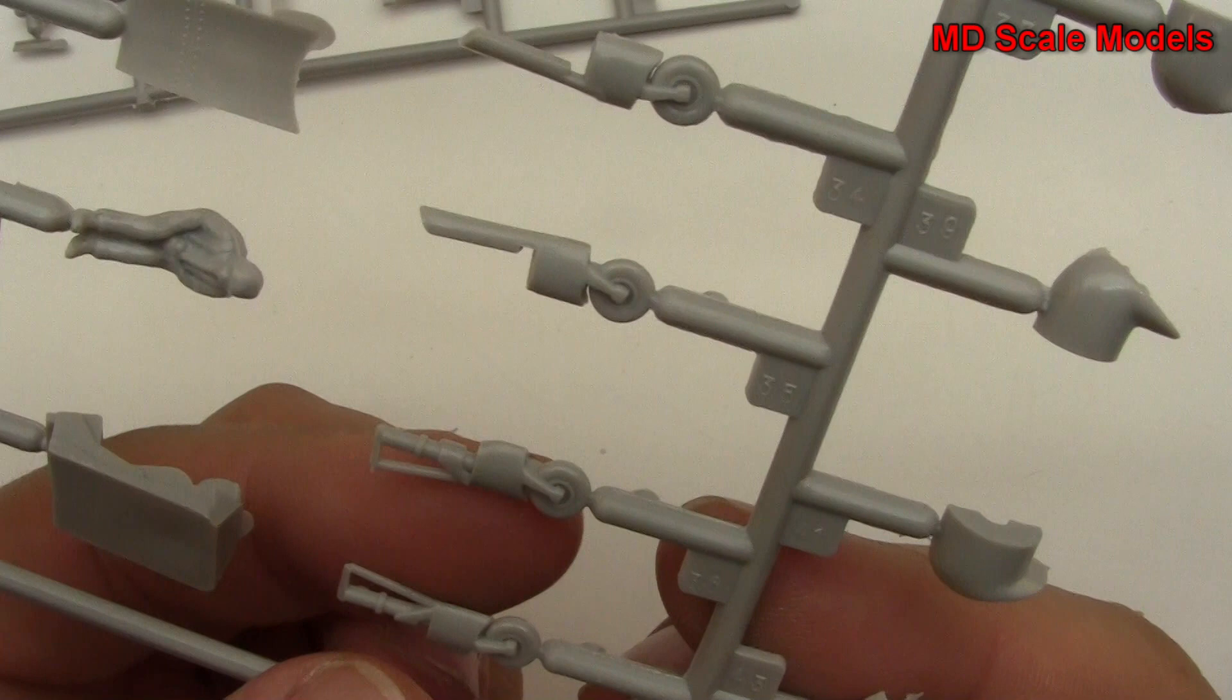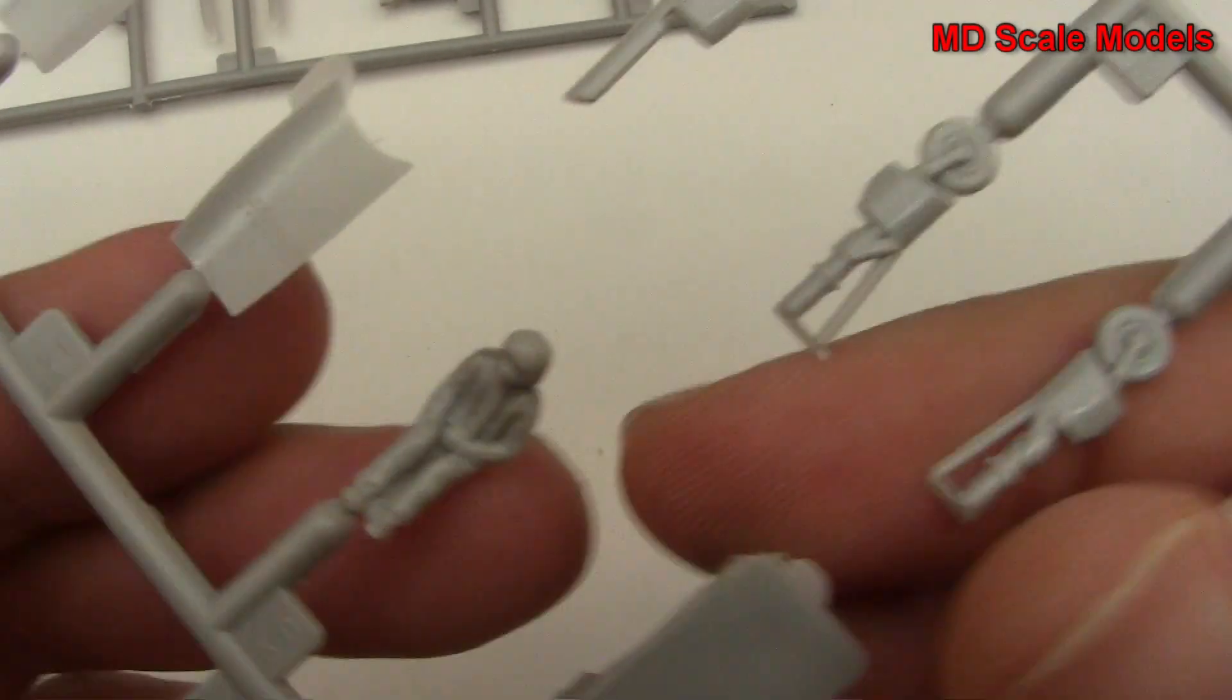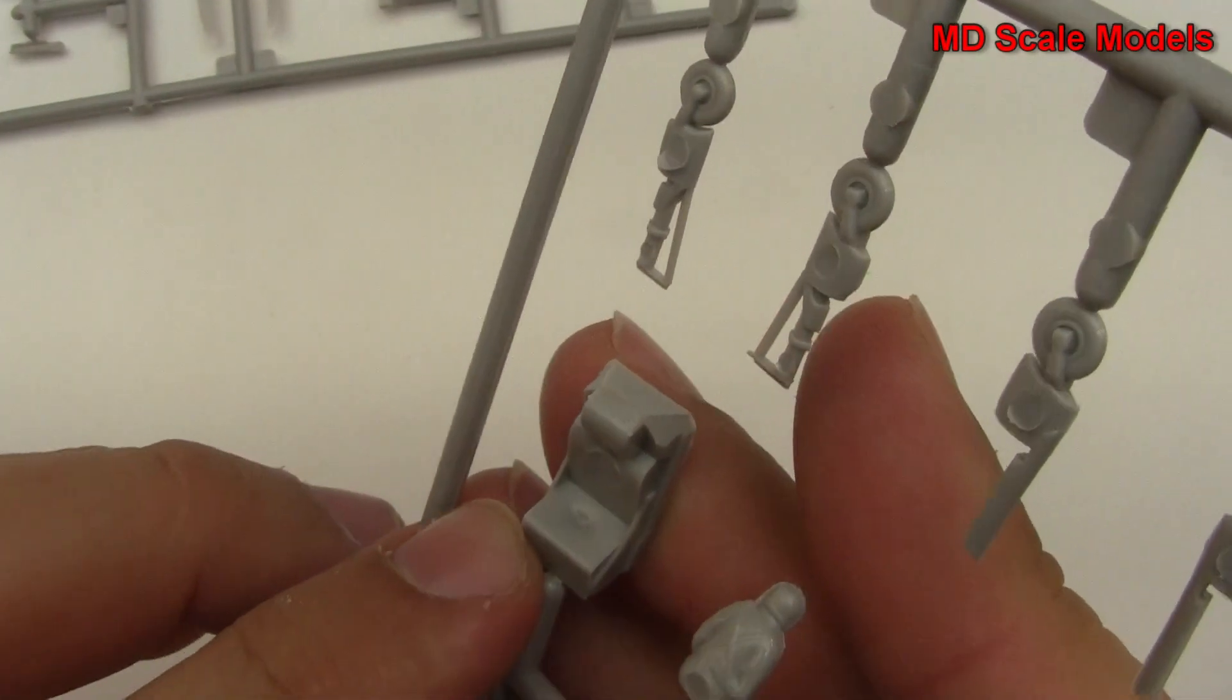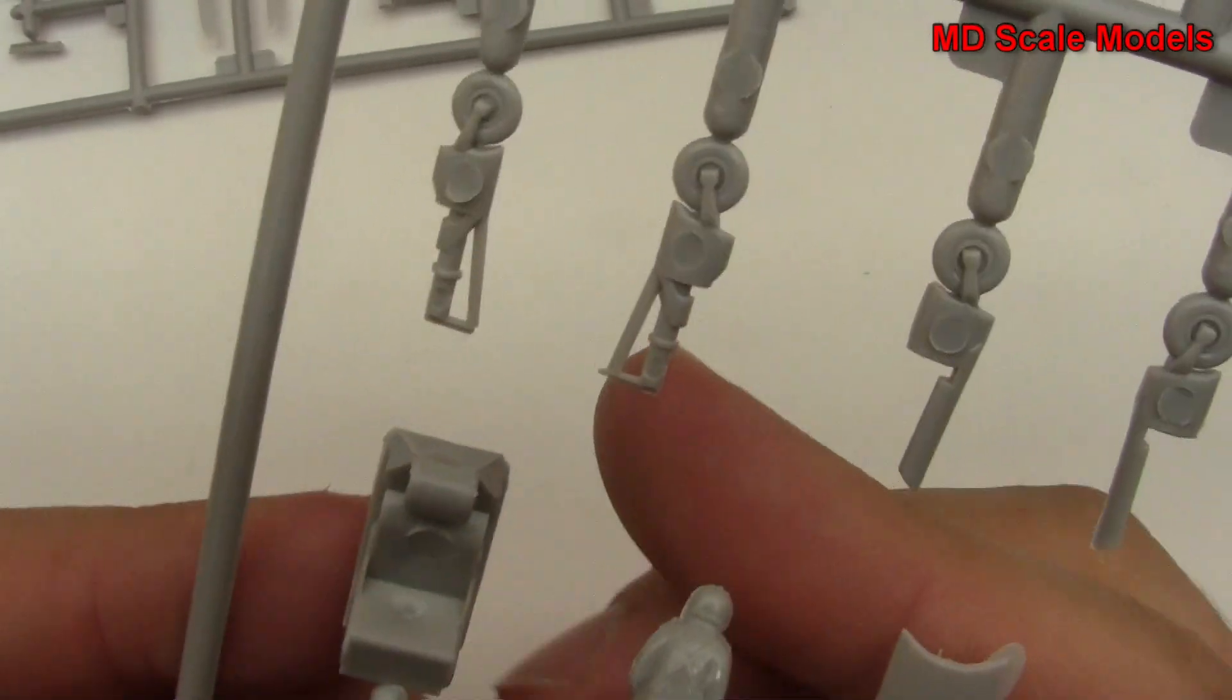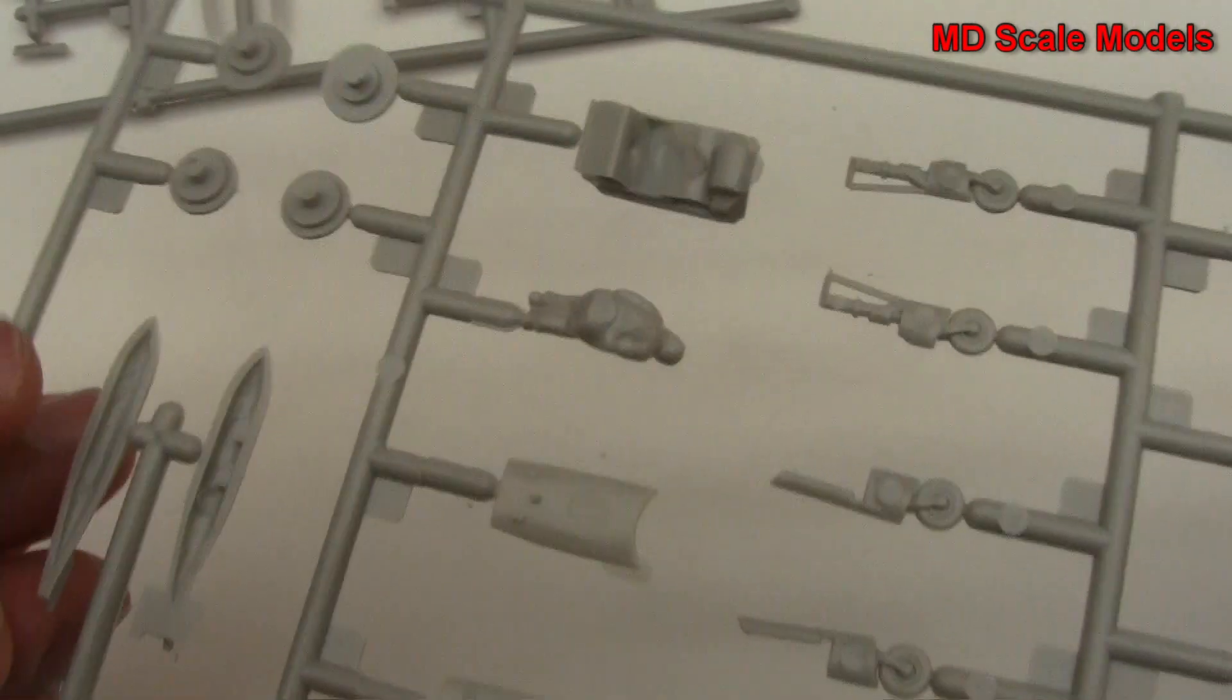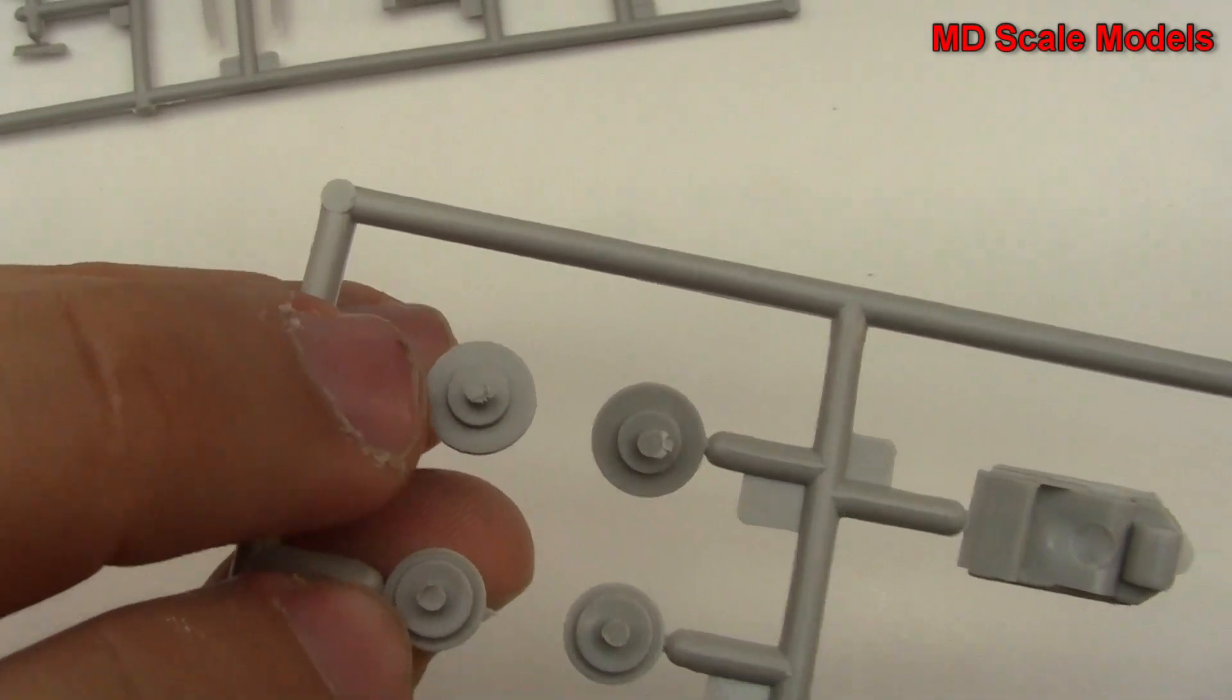Those might be the wing wheels actually, and then main and front wheel. We've got a pilot there, and there's his seat. Not really a lot of detail there.